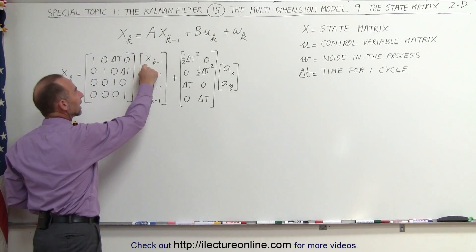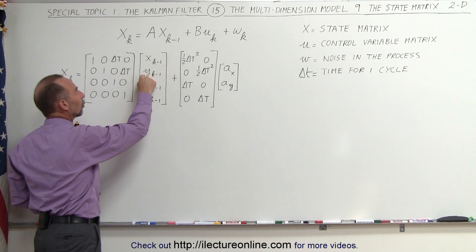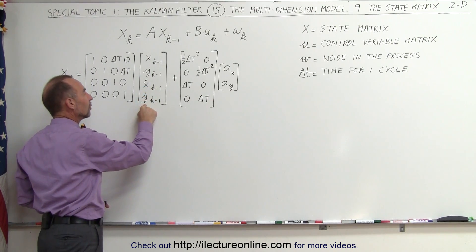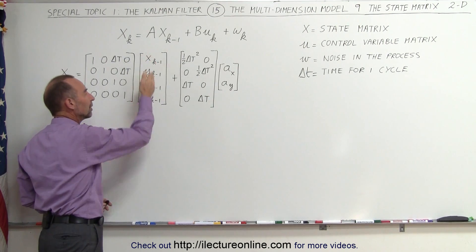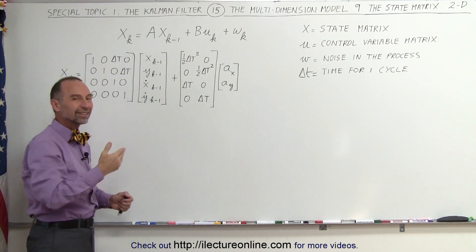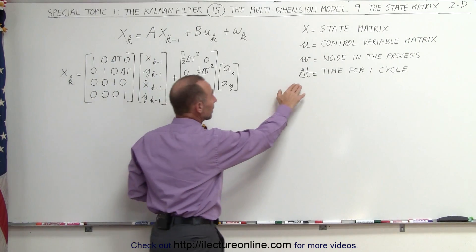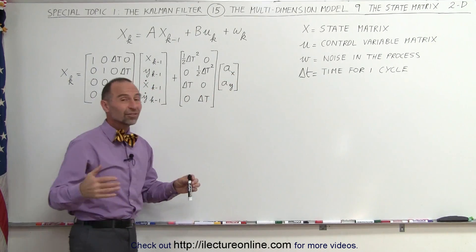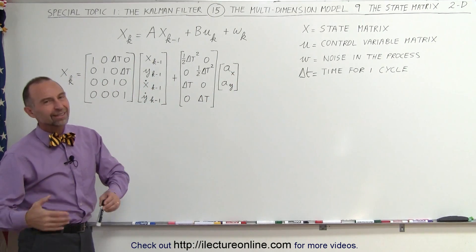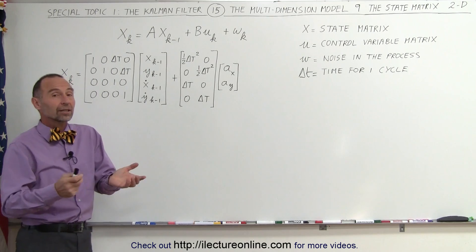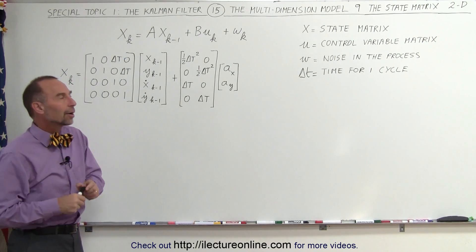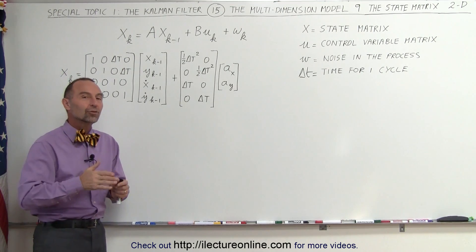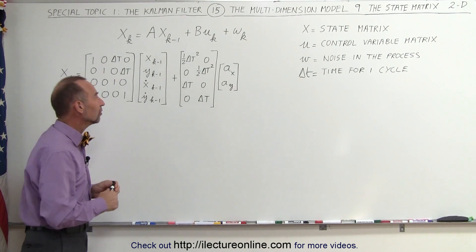Here we have the x direction, the y direction, the velocity in the x direction, and the velocity in the y direction in the previous state, a delta t ago. Delta t is whatever the time interval is — could be a second, a half second, a tenth of a second, a hundredth of a second — depending upon how your tracker is working and how often you want updates to the observations.